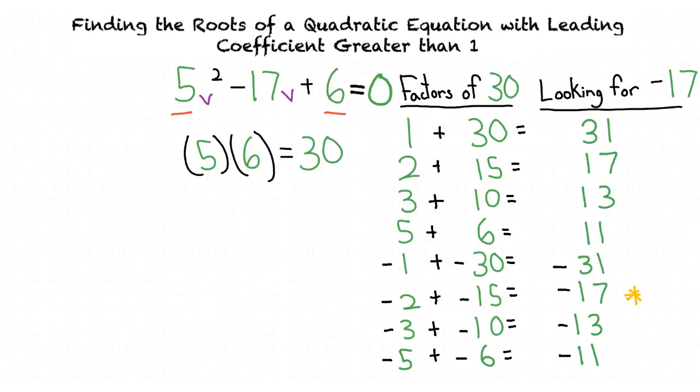The second difference between this topic and the previous topic is how we factor the quadratic equation. We replace negative 17v with our two factors to get 5v² - 15v - 2v + 6.